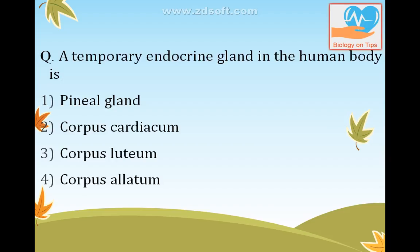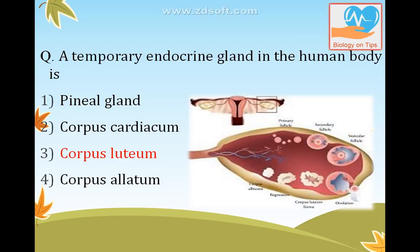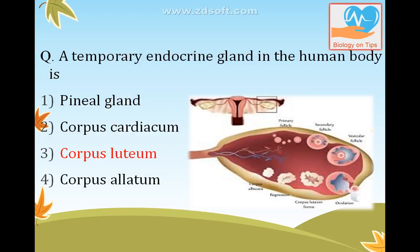A temporary endocrine gland in the human body is corpus luteum — a very important question. Corpus luteum is formed during ovulation at the 14th day of the menstrual cycle when the egg is released into the fallopian tube. The body left inside the ovary is called corpus luteum; it contains yellow-colored fluid called luteal fluid and plays an important role in secretion of progesterone during pregnancy until the formation of the placenta.